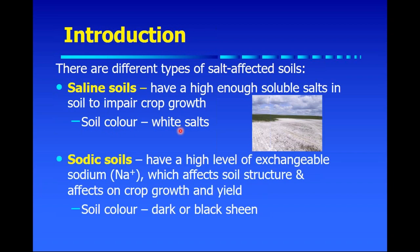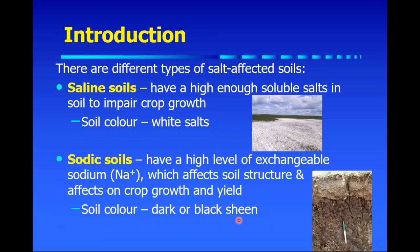We do have other types of salt-affected soils. One that's relatively common in Western Canada is sodic soils — classified as solonetzic soils typically. These soils have a high level of exchangeable sodium that can very negatively affect soil structure and can also affect crop growth and yield. If you look at a profile of a solonetzic soil, you'll find the B horizon below the topsoil has a columnar structure, and the surface of the soil aggregates is coated with sodium, giving it a dark or even black sheen when wet.